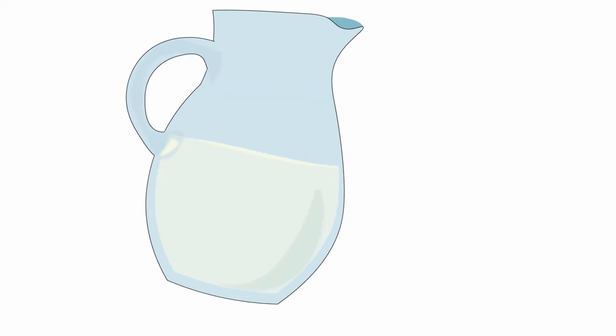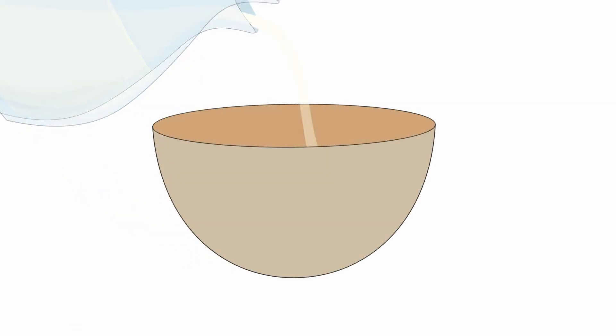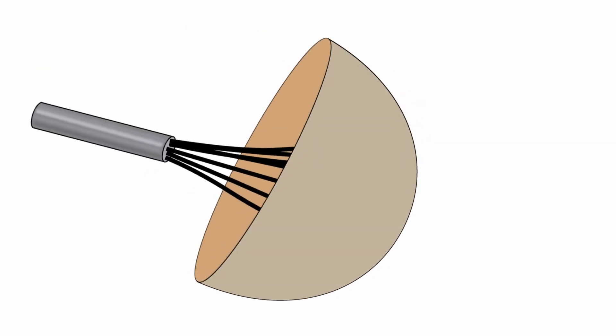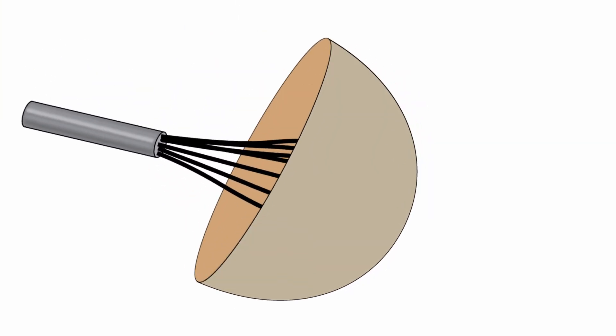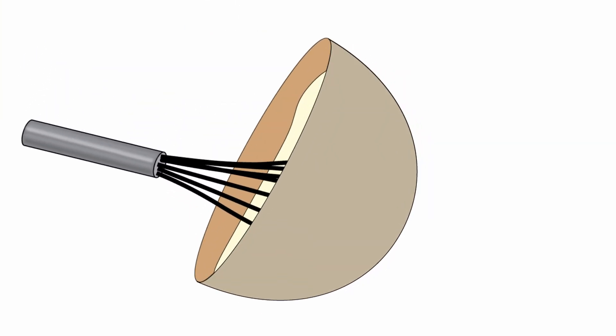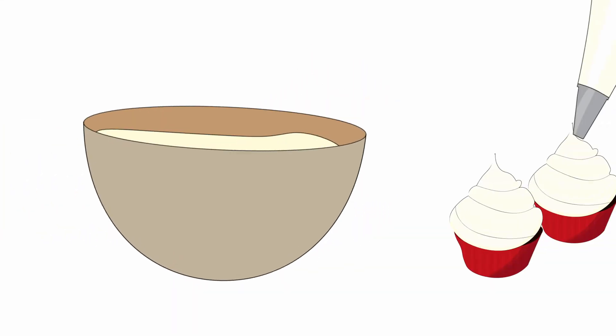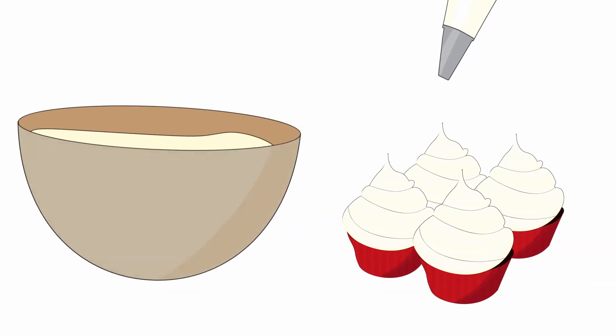And then why is it that fresh cream does something completely different? It starts off thin enough to pour, but when it's whipped it does two things: it increases in volume and it thickens to the point that you can pipe it onto cupcakes.